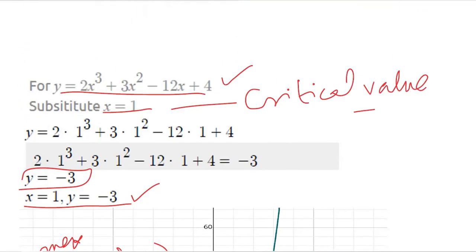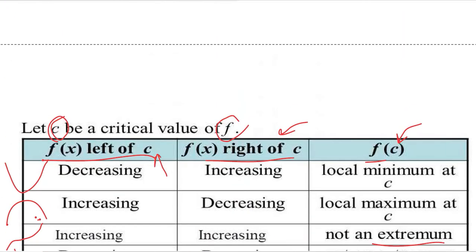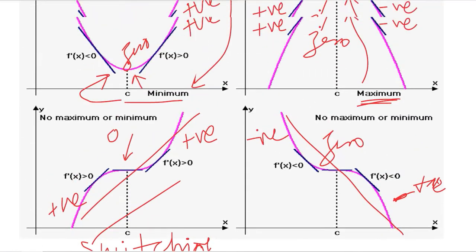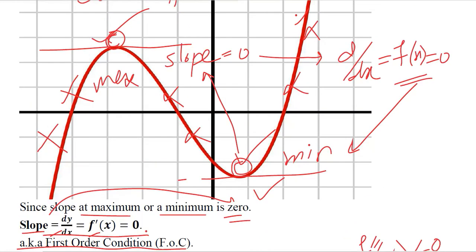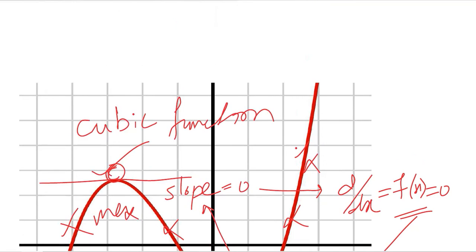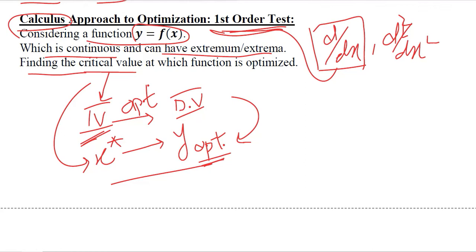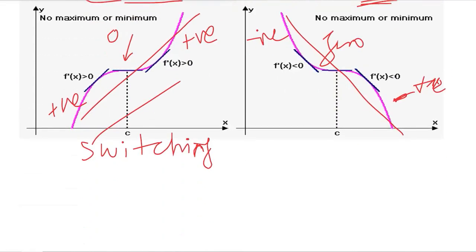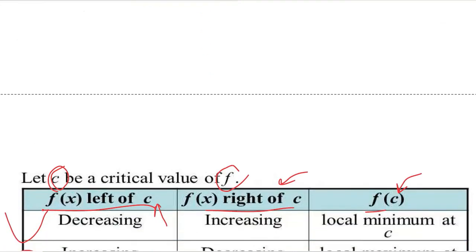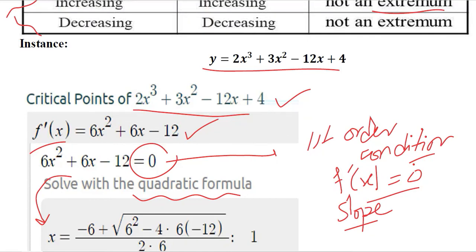In this way, optimization can be mathematically performed. We can also make sense of it using the second order condition and the first order condition, which tells us the slope at any optimum point is zero. This was the calculus approach to optimization. The second order condition has been explained here briefly, but further description will be provided in upcoming videos.